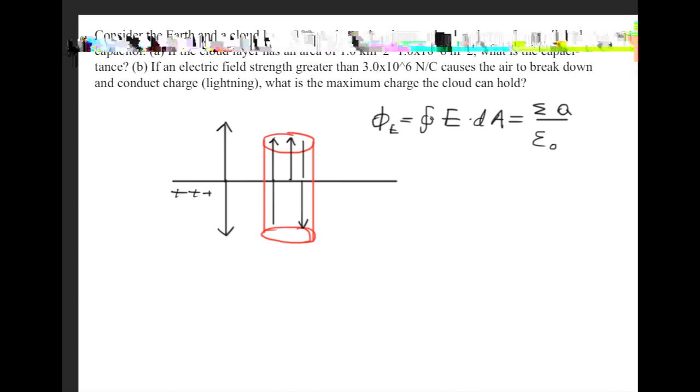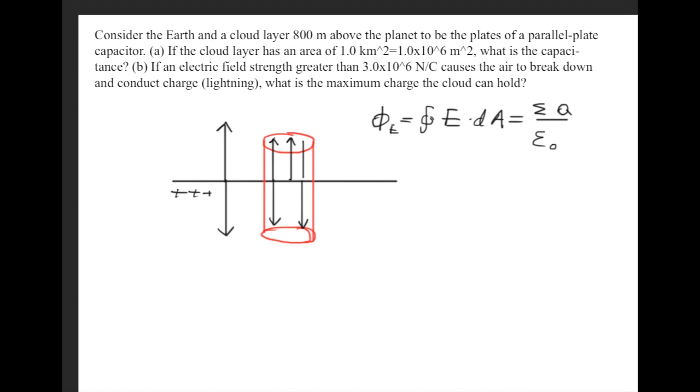It won't go through the sides because on the sides of the cylinder, it's at a 90-degree angle. Or I should say it's going parallel with it, so the flux at the sides is zero.